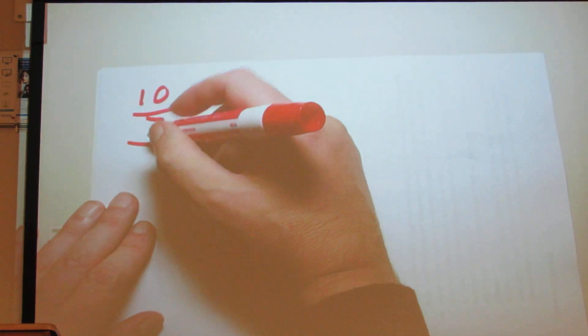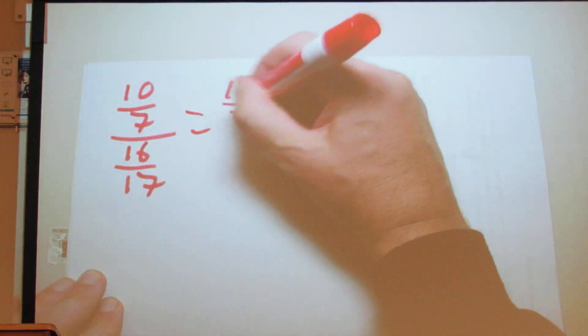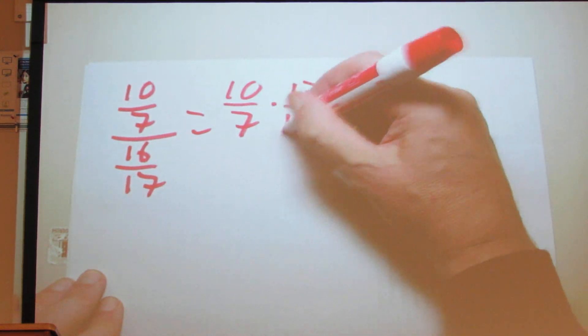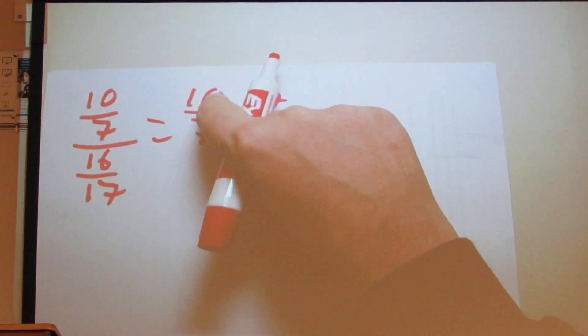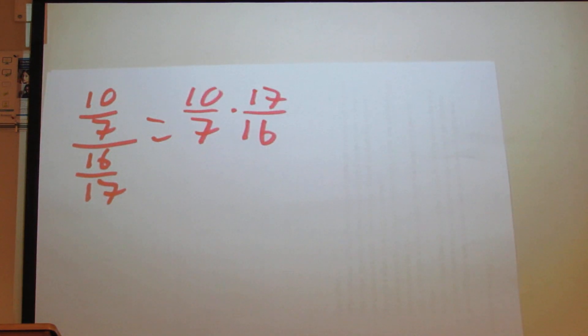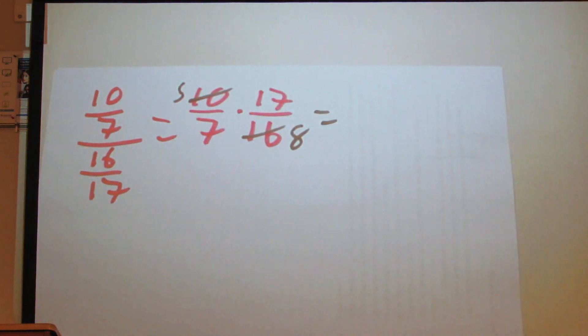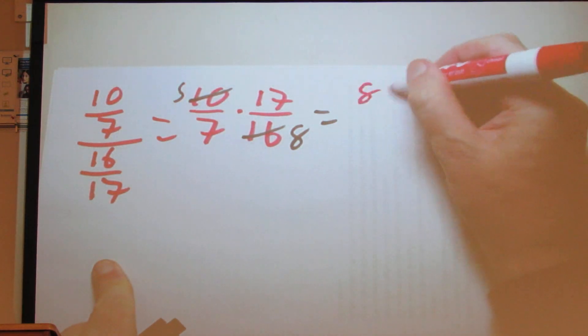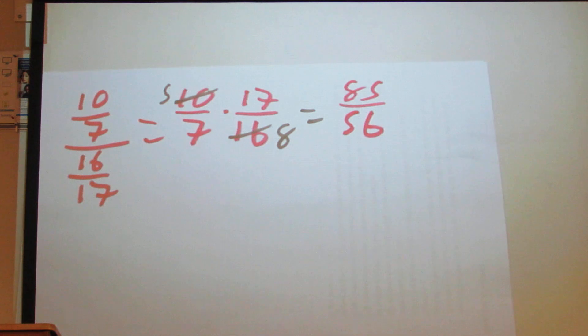Next you'll have fraction division: 10 over 7, divided by 16 over 17. Rewrite this as multiplication by flipping the second fraction: 10 over 7 times 17 over 16. To simplify, divide both 10 and 16 by 2, giving 5 over 7 times 17 over 8. So 5 times 17 is 85, and 7 times 8 is 56. We can't simplify 85 over 56 further, so that's the answer.